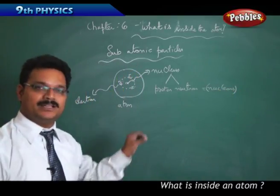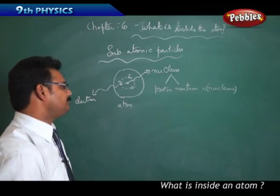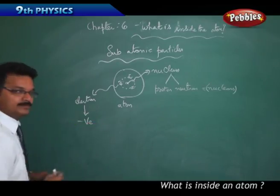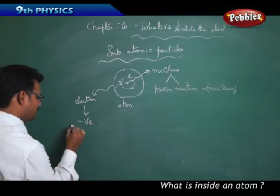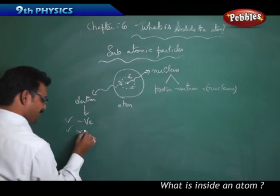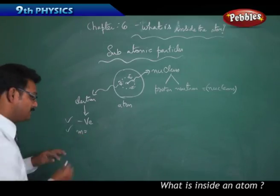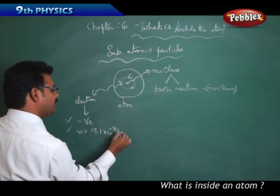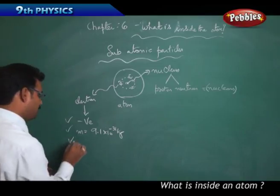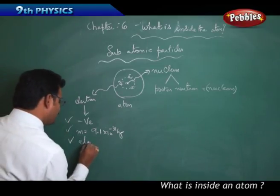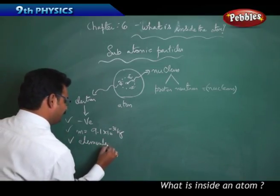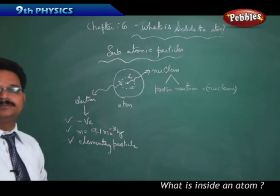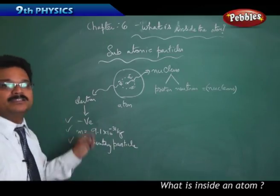Coming to the electron — electron has a negative charge and its mass is very very small. The mass of the electron is 9.1 × 10⁻³¹ kg. That's why electron is called an elementary particle, meaning you cannot divide the electron further.